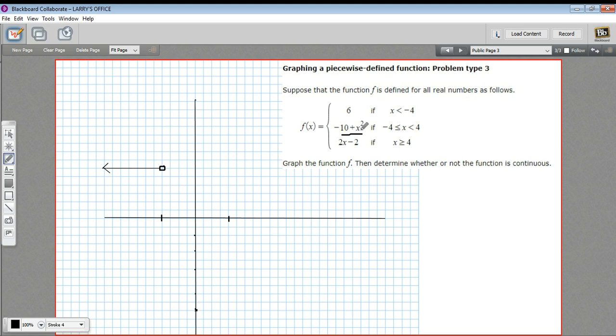If I plug in, let's say, a 1 for x, 1 squared would be 1, minus 10 would be negative 9. So 1, negative 9 is on this graph. And if I plug in a negative 1, I'd get the same thing. So you can see how this is going to go.